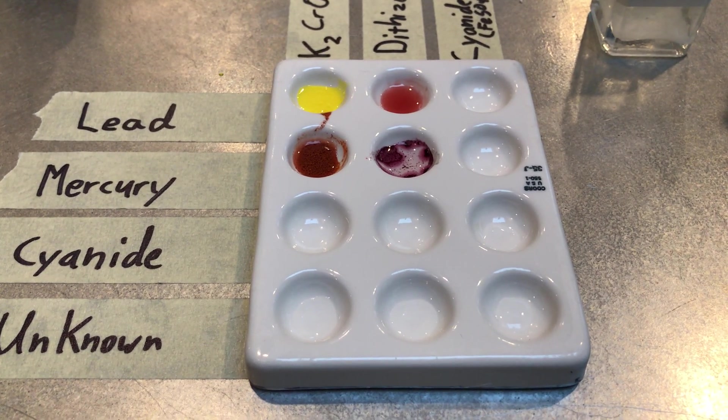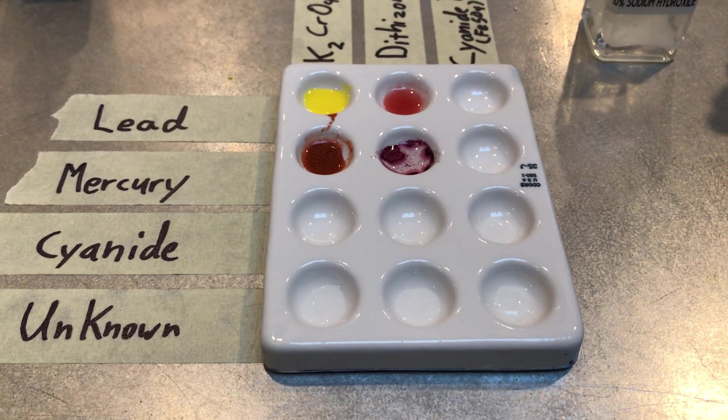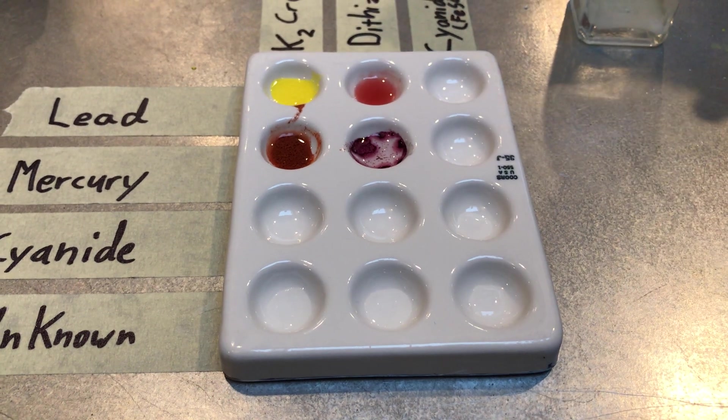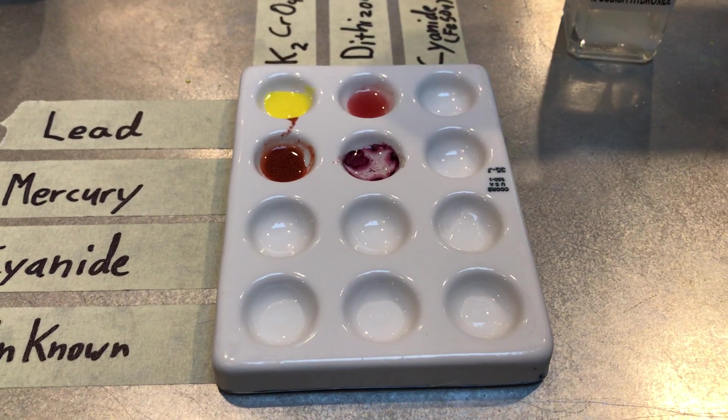But we do have to know what the outcome looks like. The first thing we need to do is add one drop of sodium hydroxide solution to our cyanide well. Very good Liam, if you wouldn't mind giving that a mix please. Excellent, perfect.